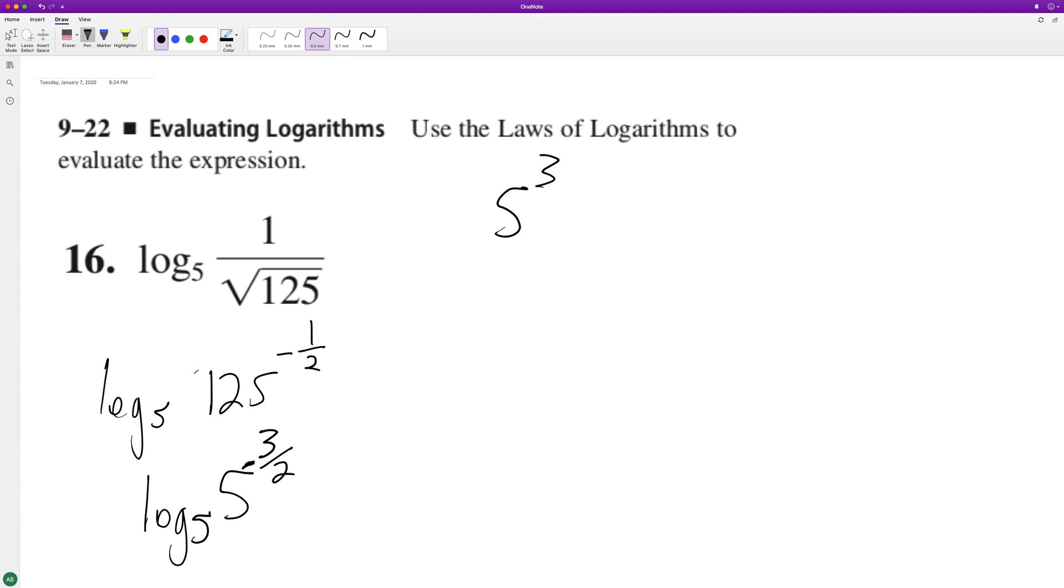When you combine logarithms you multiply them, so we end up with log base 5 of 5 raised to the negative 3/2. Because the log base and the base of the exponent are the same, we just get rid of it and we end up with negative 3/2. That's it.